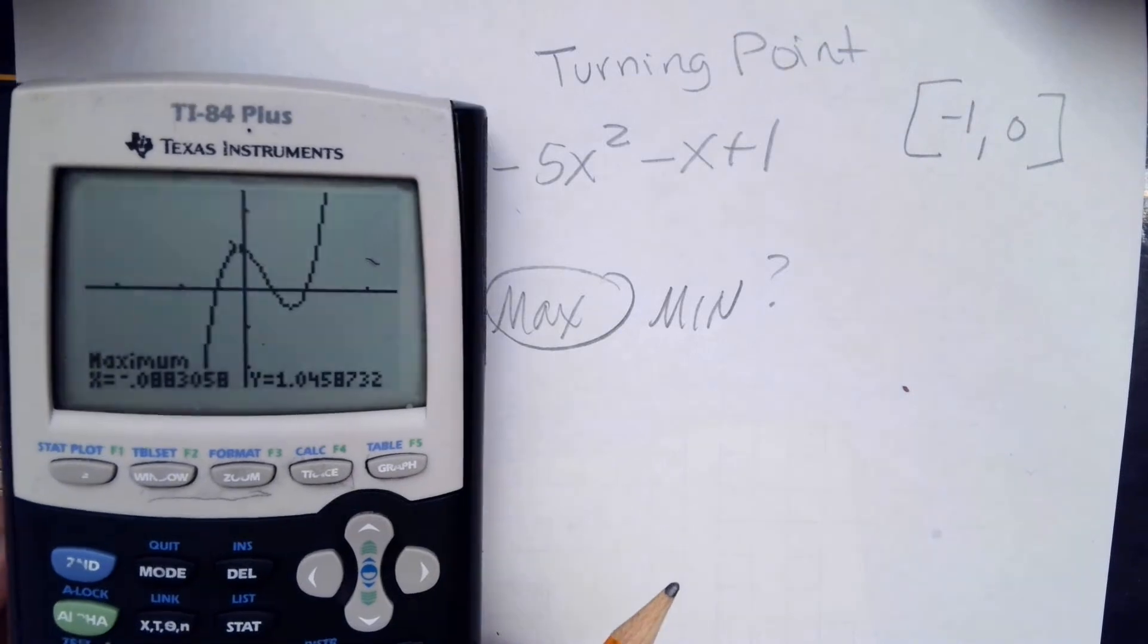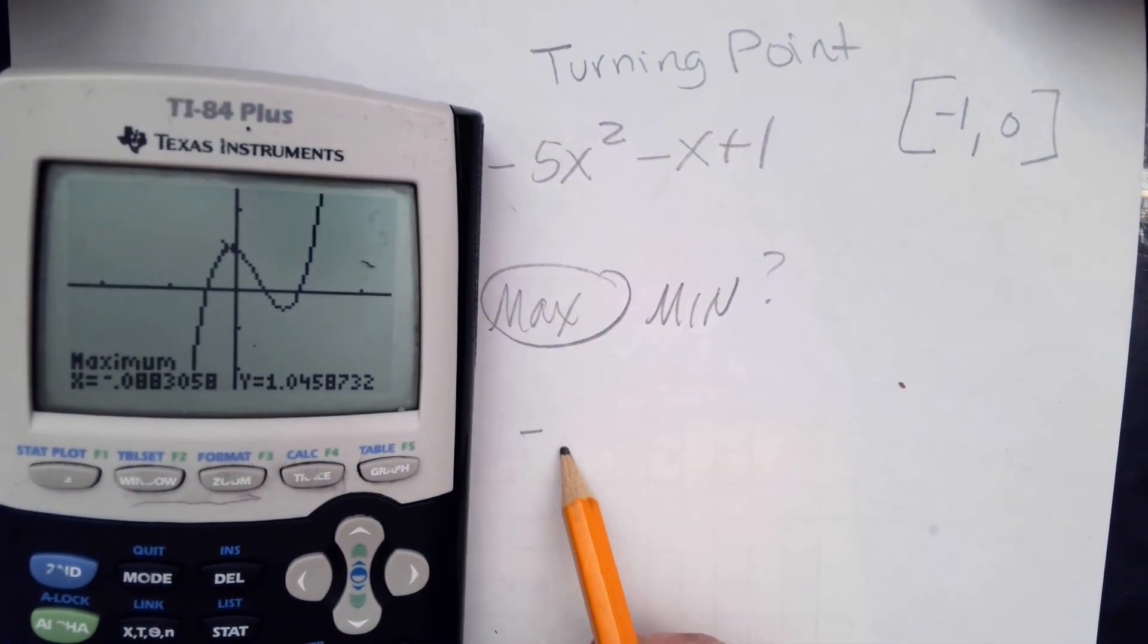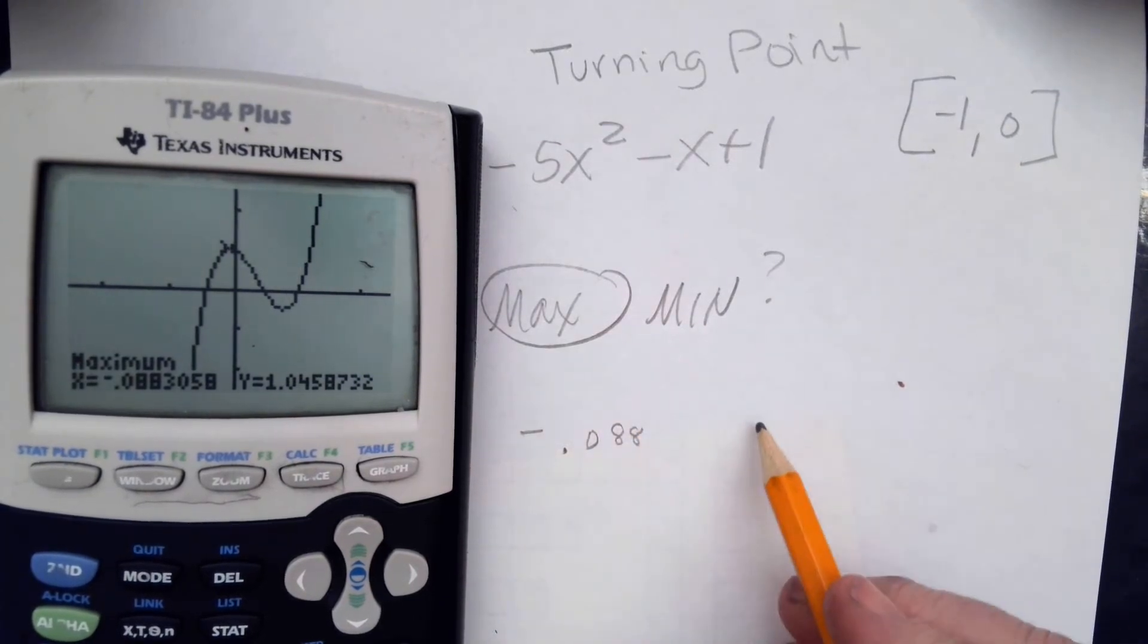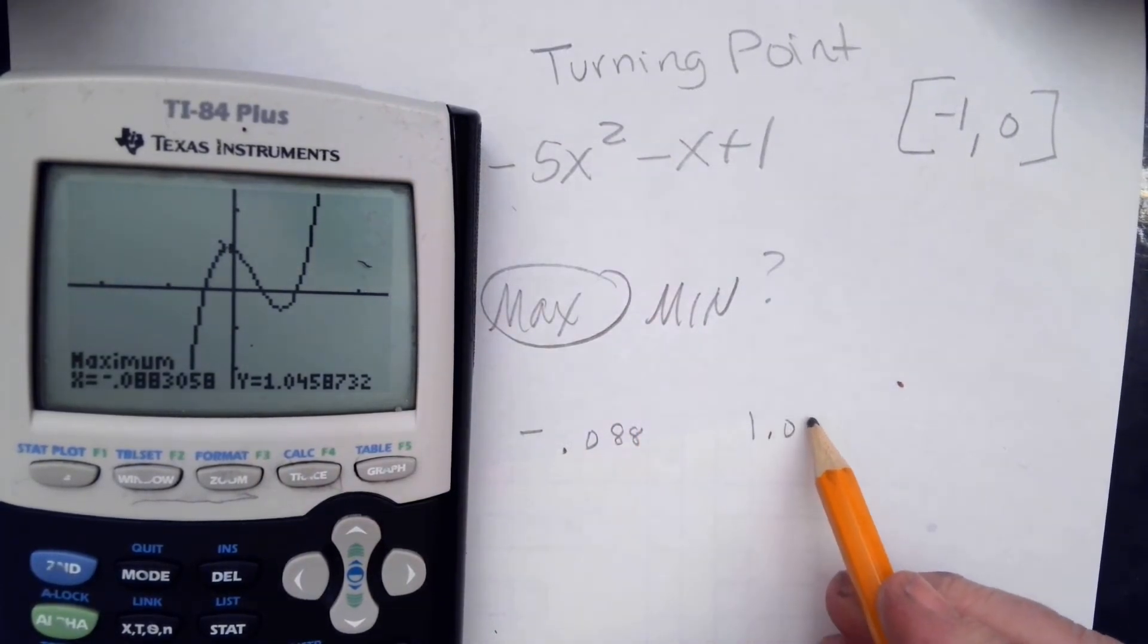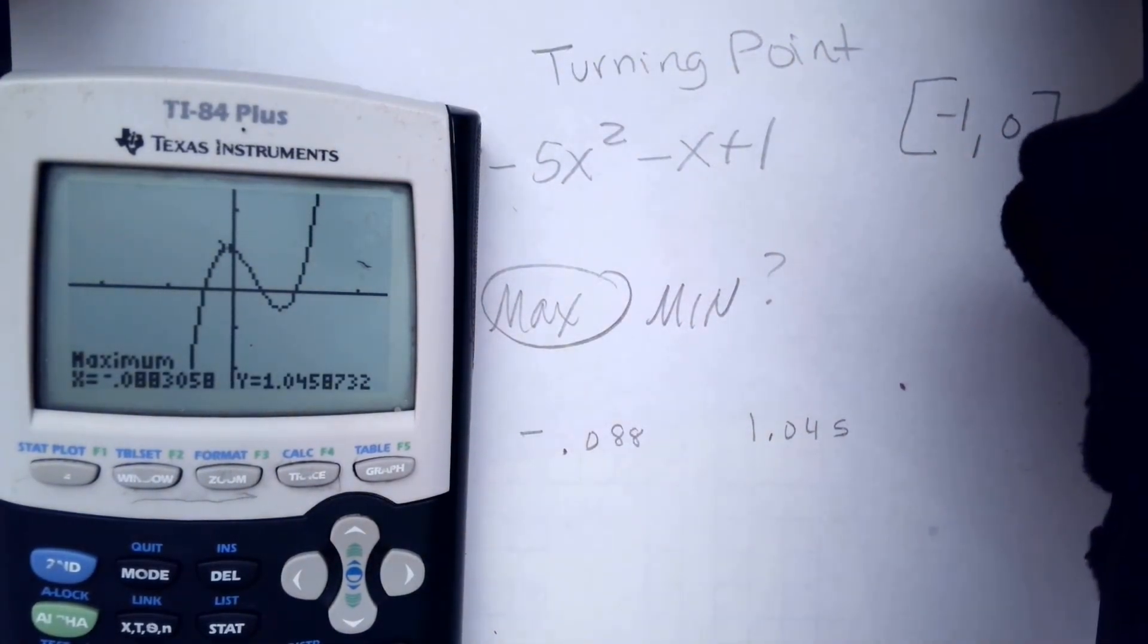And it's going to give me its maximum is at negative 0.088 and 1.045. And then I'm going to round it however they asked me to round it here. Round it to the nearest hundredth.